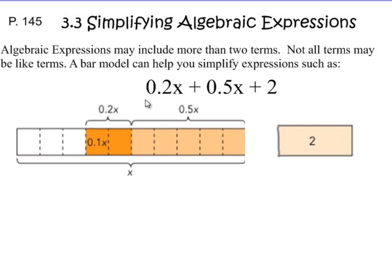Like things are these tenths that have the x term on them — those are like terms and can be added together. When we simplify this expression, 2 tenths x plus 5 tenths x gives us 7 tenths x. Our numerical constant 2 stays separate because it's not a like term. So our answer is the binomial 7 tenths x plus 2.